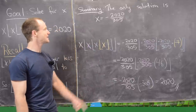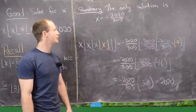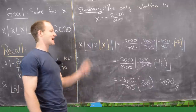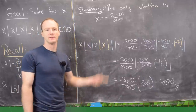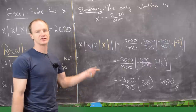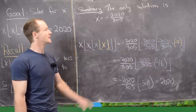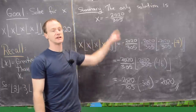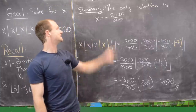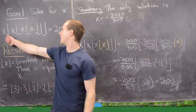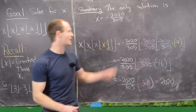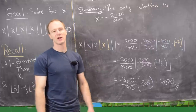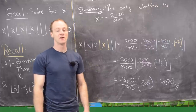So the only solution is x equals -2020/305. The verification is done from inside to outside and I've color-coded the calculation — you can pause to check it. Since our solution is negative, if x is greater than -2020/305 the product is less than 2020, and vice versa, confirming uniqueness.